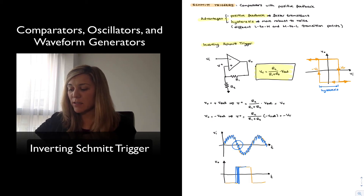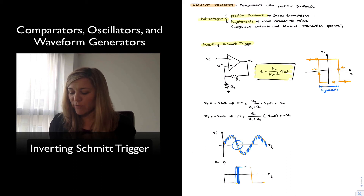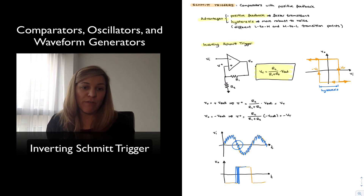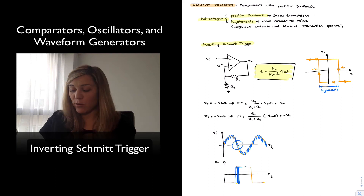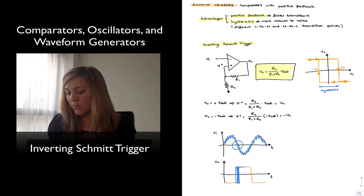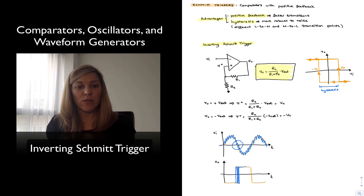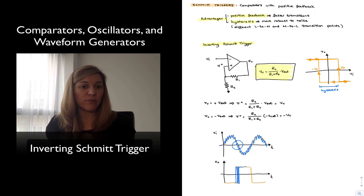If we have hysteresis, the output signal will not go from high to low until the input signal has gone beyond the transition voltage in one direction. For the output to flip from low to high, the input signal must reach −Vt, and for the output to transition to its low state, the input must go past +Vt. Therefore the output signal will be cleaner. Depending on how noisy the input signal is, we can adjust the amount of hysteresis to avoid false transitions due to noise.